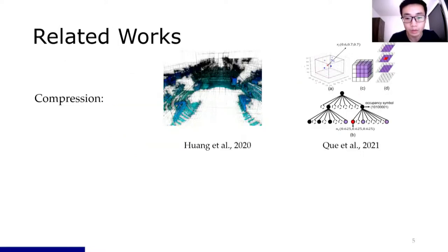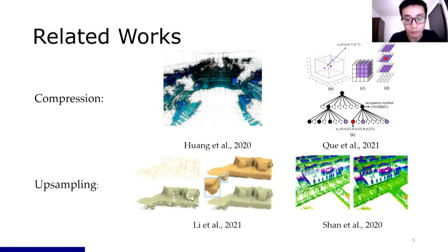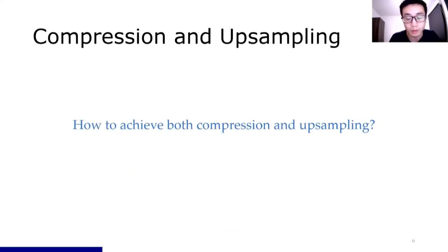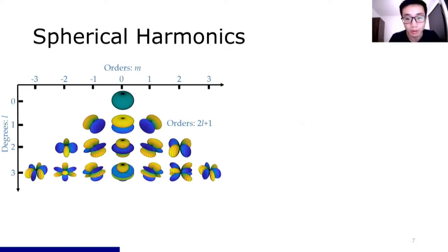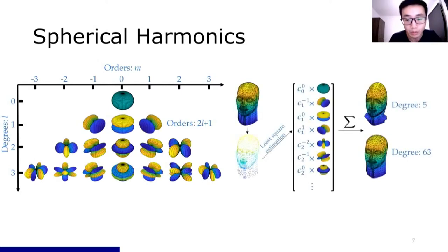For point cloud compression, recent works depend on tree structures, which are hard to represent hollow regions and enhance density. There are some works that can do upsampling, but none can do compression at the same time. Therefore, we introduce spherical harmonics functions, which are orthonormal and complete, meaning all 3D polar functions can be decomposed into a series combination of spherical harmonics functions.